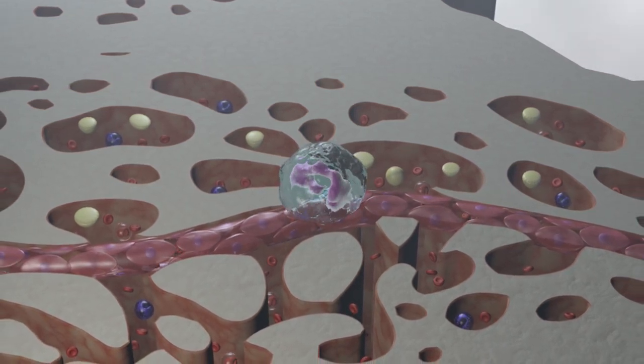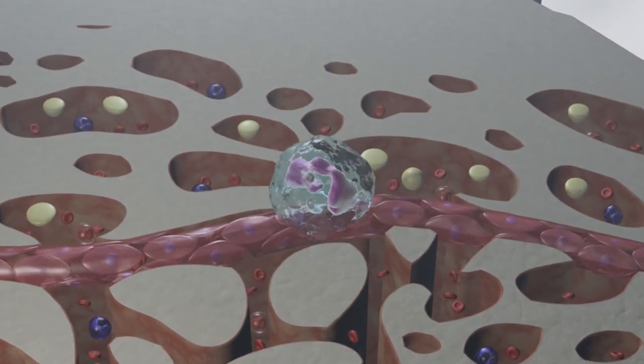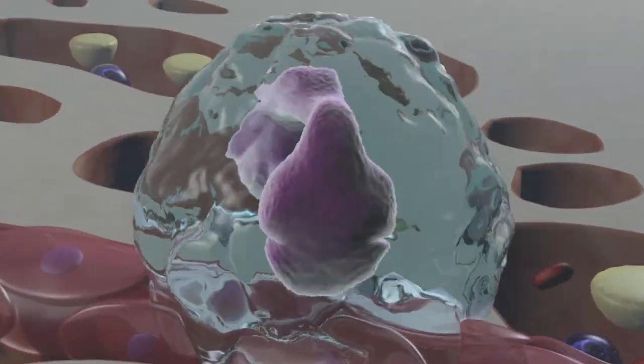Megakaryocytes are therefore too large to enter the sinusoidal vessels. Instead, cytoplasmic processes of the megakaryocyte penetrate the endothelial pores.